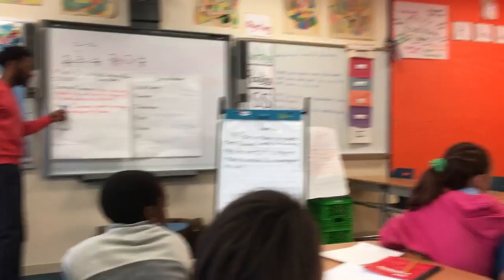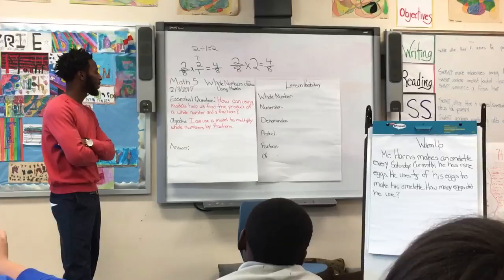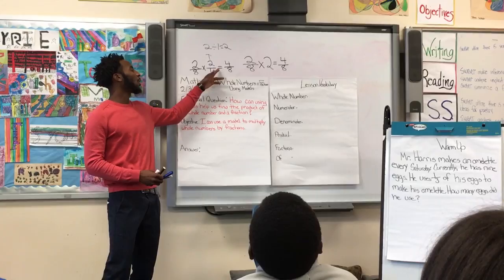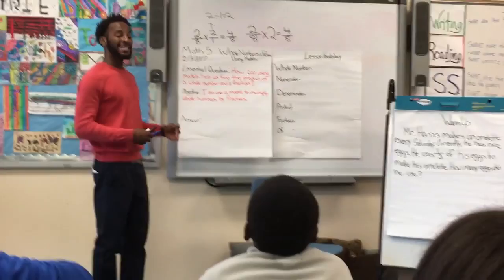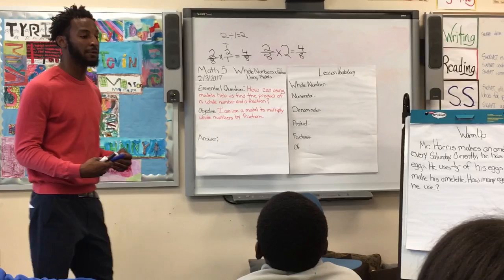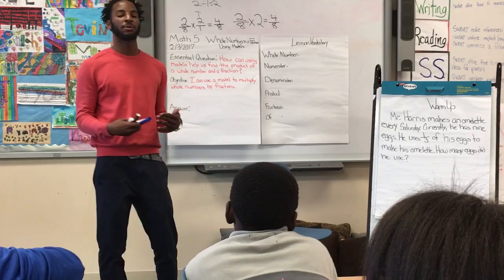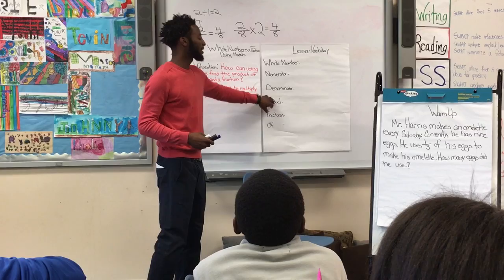Let's go back to our objective. Someone read it for us. 'I can use a model to multiply whole numbers by fractions.' We said we know how to multiply whole numbers by fractions by placing a one as the denominator. Today we're going to use a model. I'm also going to use some actual eggs on the carpet to help us.